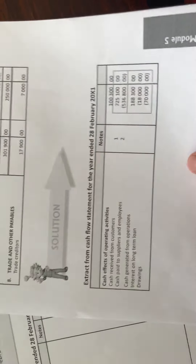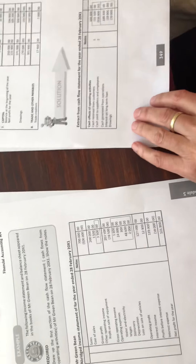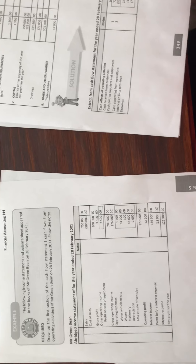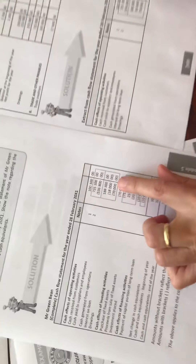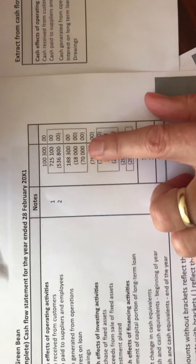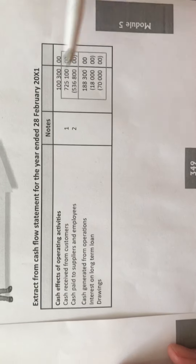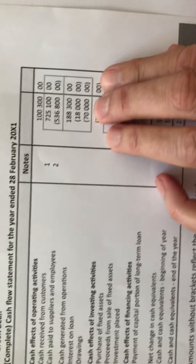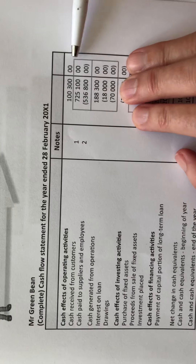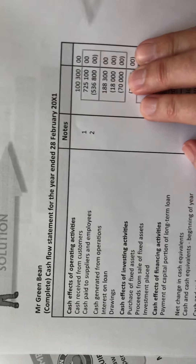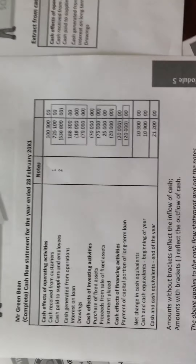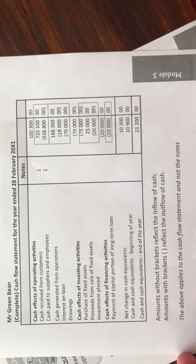Now let's get to the second part. The cash effects of operating activities on both versions of the statement are exactly the same — 100,300. I'm going to continue on this one to show you the complete cash flow statement.